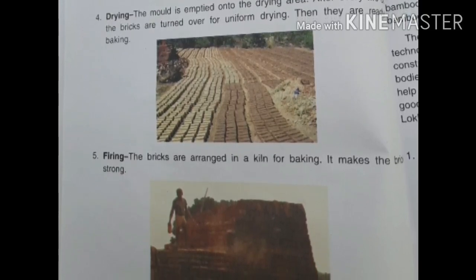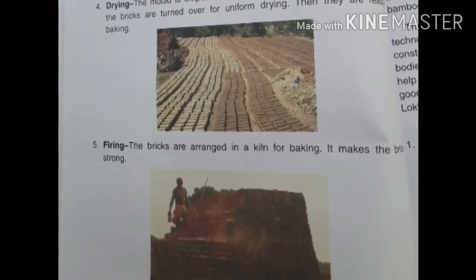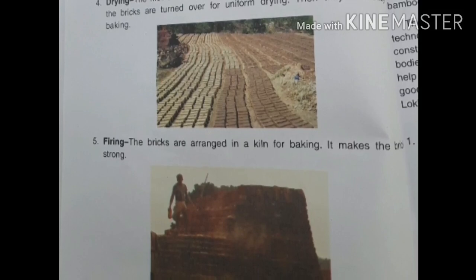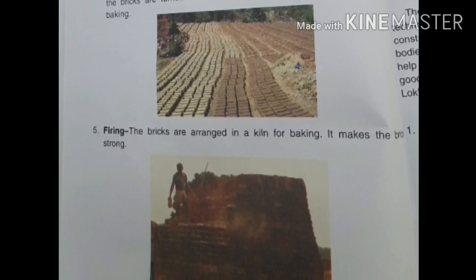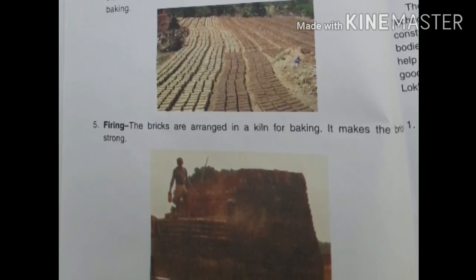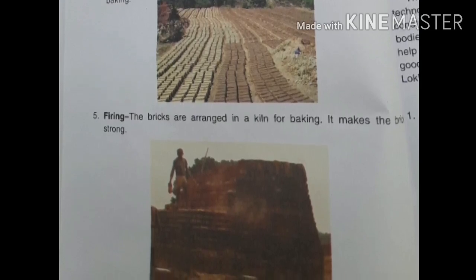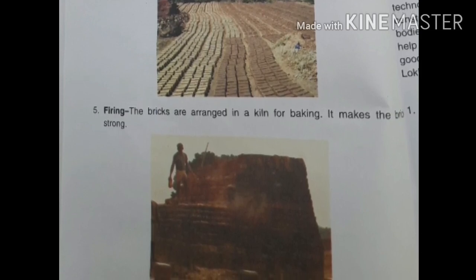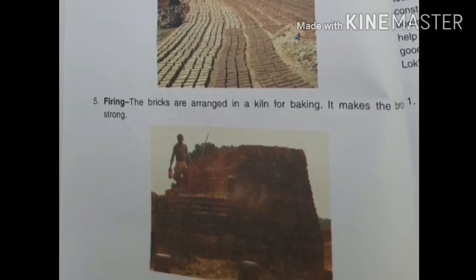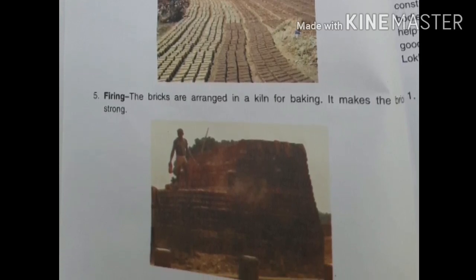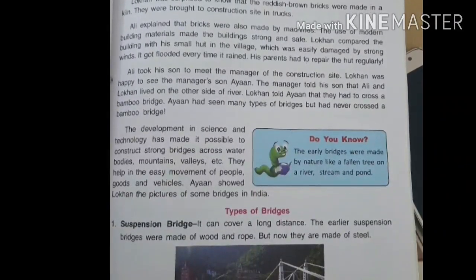Once the drying process is done, the bricks are ready for baking. The last process is firing, in which the bricks are arranged in a kiln for baking. The bricks made of clay are baked in the kiln and they become strong bricks. Once baked, they turn into reddish-brown bricks.